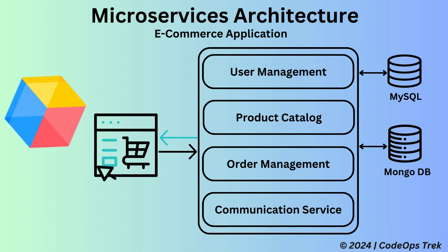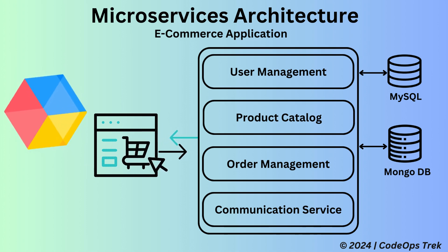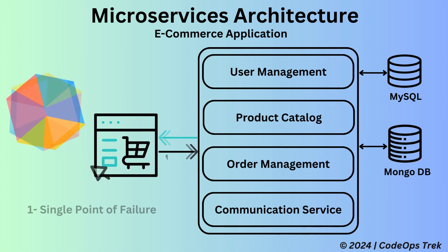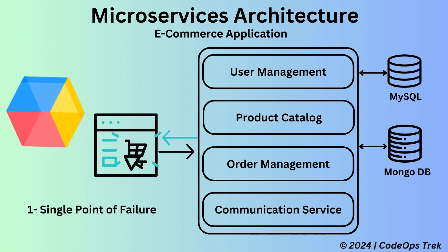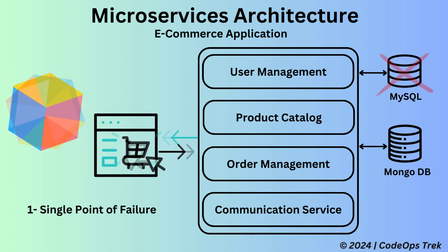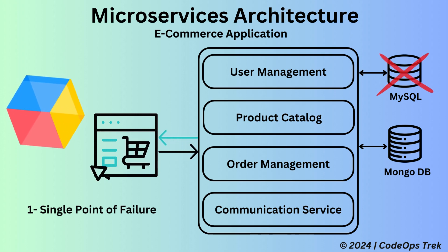Let's understand the problems with this setup. While there are multiple issues with a monolithic architecture, we'll focus on the major ones. First is single point of failure — if any service or database goes down, it can bring down the entire application. For example, if the MySQL database for user management fails, users might lose access to their accounts, affecting the whole platform.